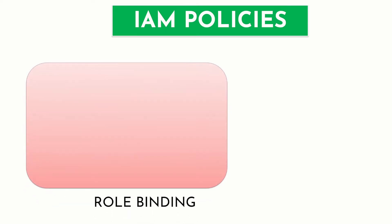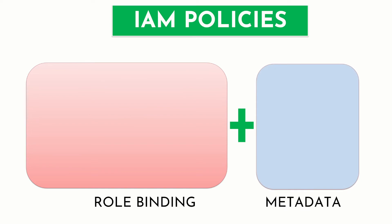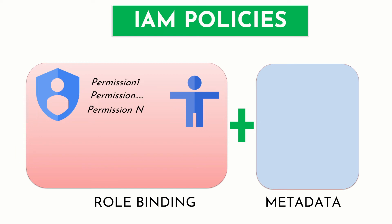A policy is nothing but a collection of role bindings and metadata. Each role binding can include a principal — which is a member or identity such as a user account, service account, Google Group, or Workspace domain user — a role, which is a named collection of permissions, and an optional condition, which is a logical expression that controls when access should be granted to the principal. Metadata contains fields such as ETag and version details.